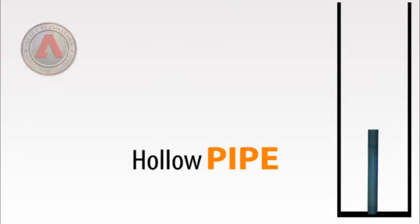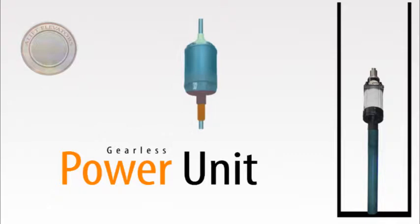A hollow steel pipe is fixed on the base of the rails. A gearless power unit is fixed on the top end of the pipe.